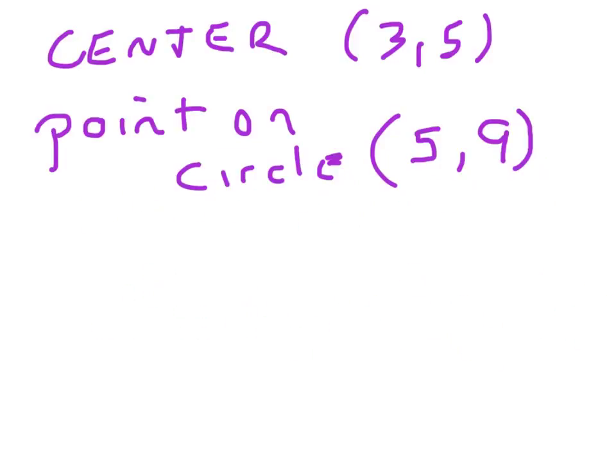Alright, here's the kind of thing we'll be given, and we'd want to use a distance formula for this. We're told where the center is, and we're told that a point on the circle is 5, 9. So now we have to figure out the radius, because if we're told the center, we know part of the equation. We know it's going to be x minus 3 quantity squared plus y minus 5 quantity squared equals r squared.